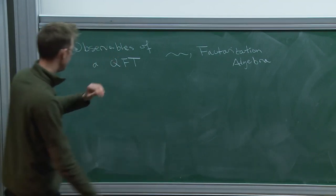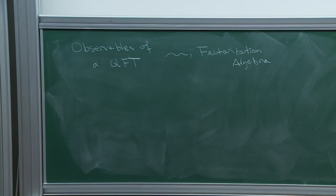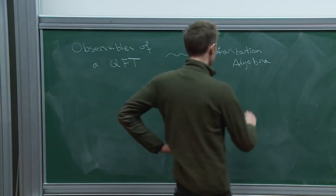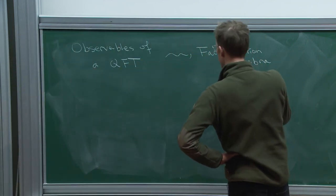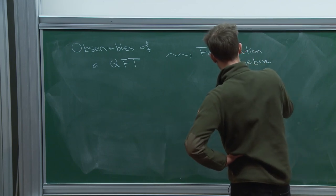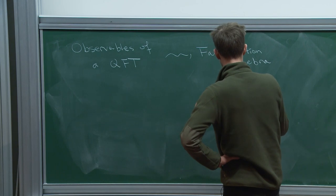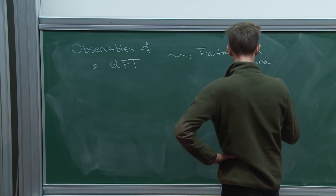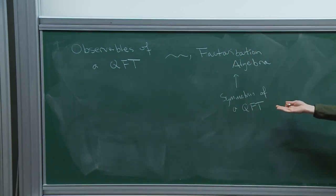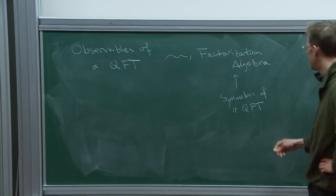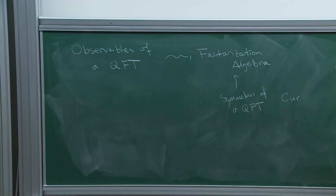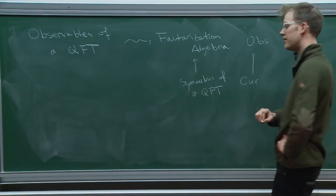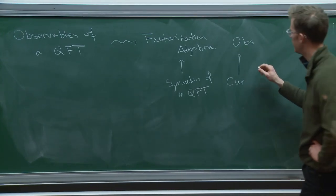Owen talked about a very nice, simple quantum field theory — the beta-gamma system in two complex dimensions — and studied its factorization algebra. We saw that symmetries of a QFT are also measured by some factorization algebra, which he called the quantum and classical currents. Symmetries of a QFT implement themselves as a map of factorization algebras to the observables, and this was the version of the Notre map.